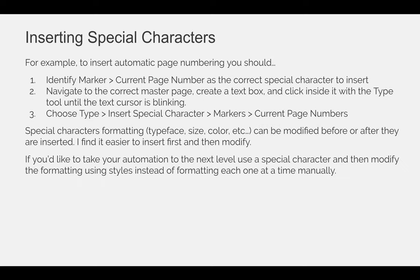For example, to insert automatic page numbering, you should identify Marker, Current Page Number as the correct special character to insert. Navigate to the correct master page, make sure that you create a text box and make sure the text cursor is blinking, and then choose Type, Insert Special Character, Markers, and Current Page Numbers. I put it on the master page because if something is going to automate in the same place, size, color, etc., it should be on a master page.